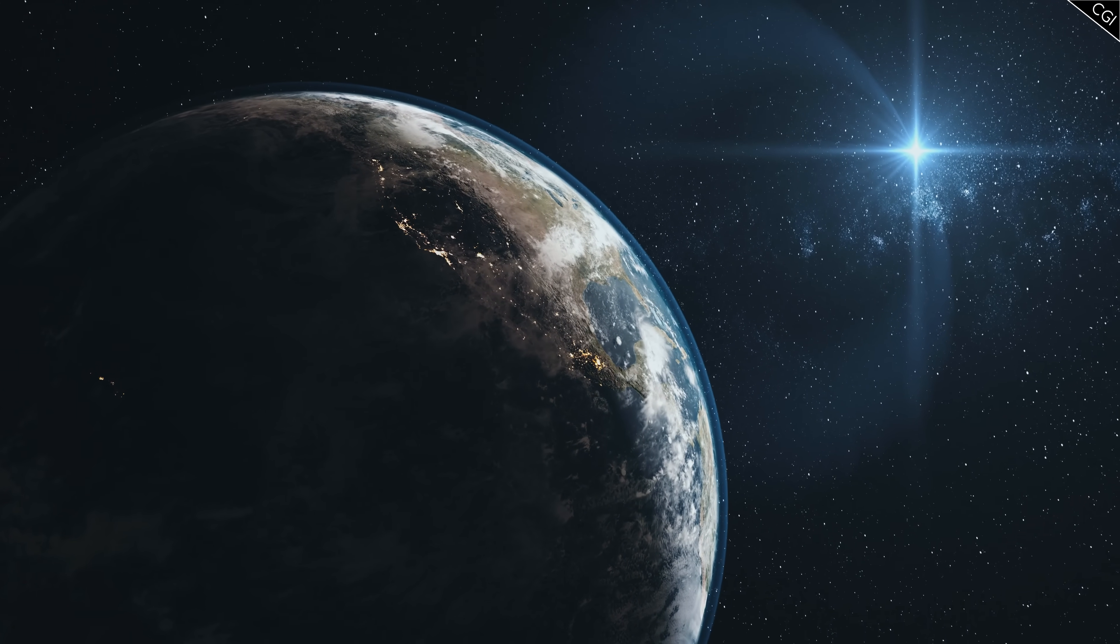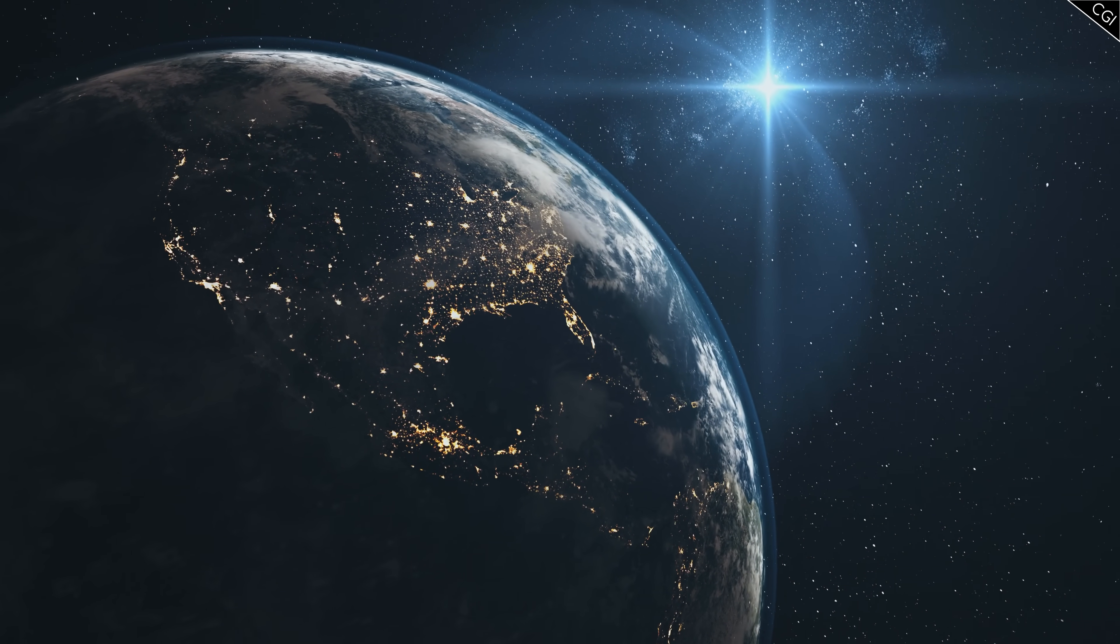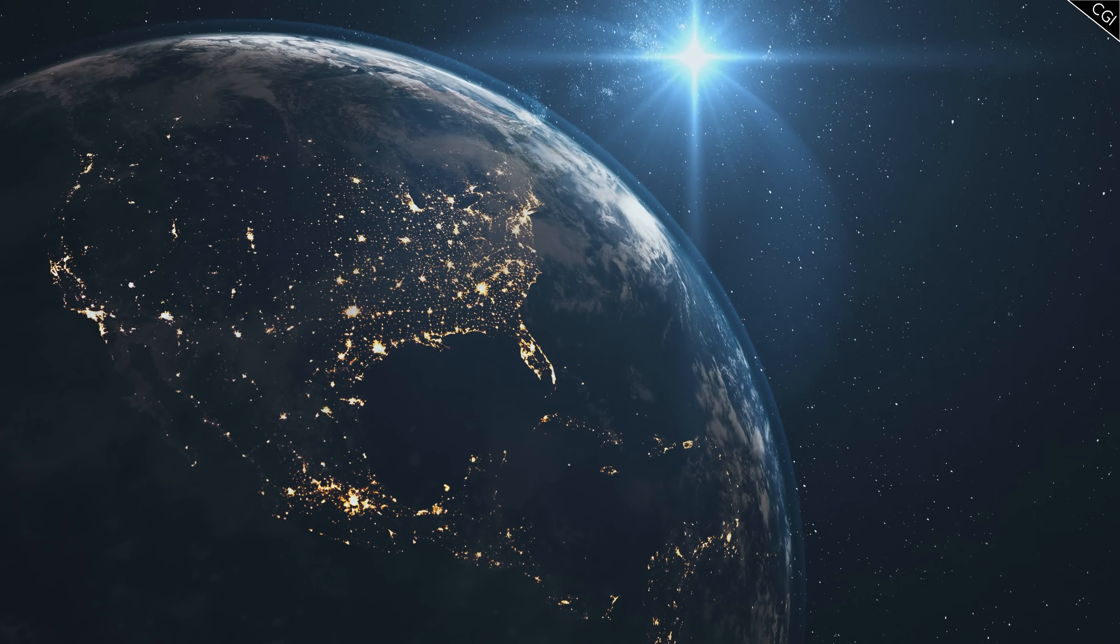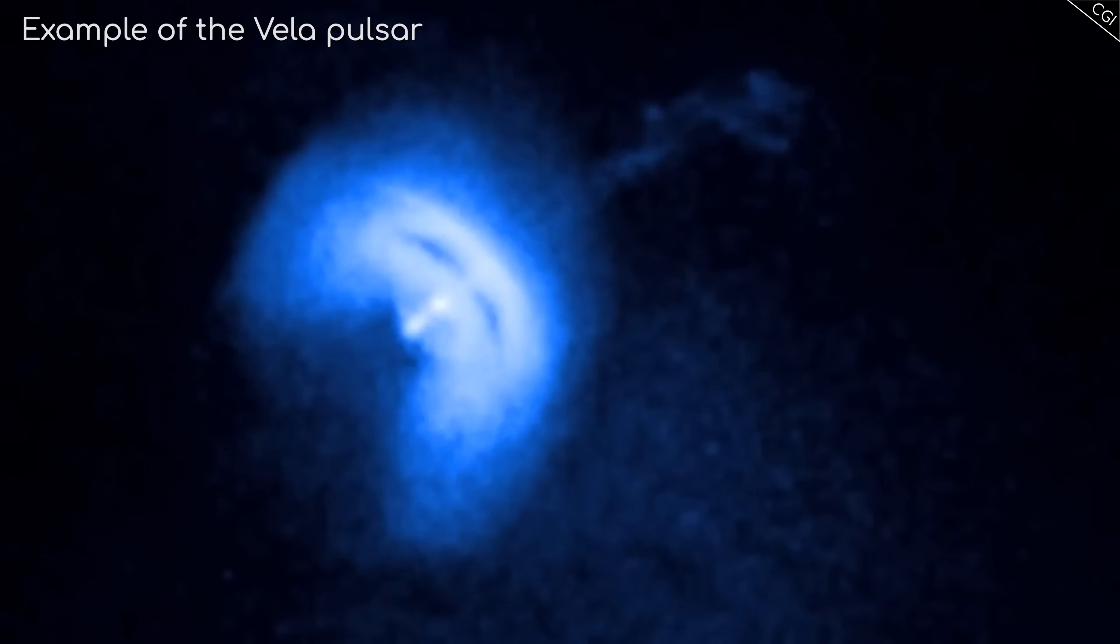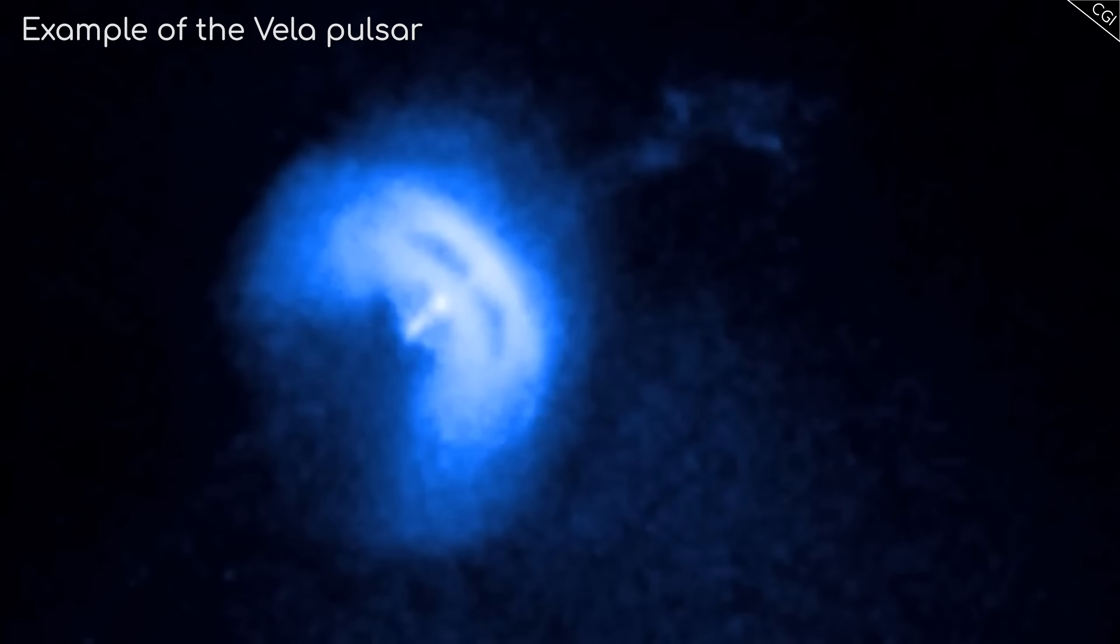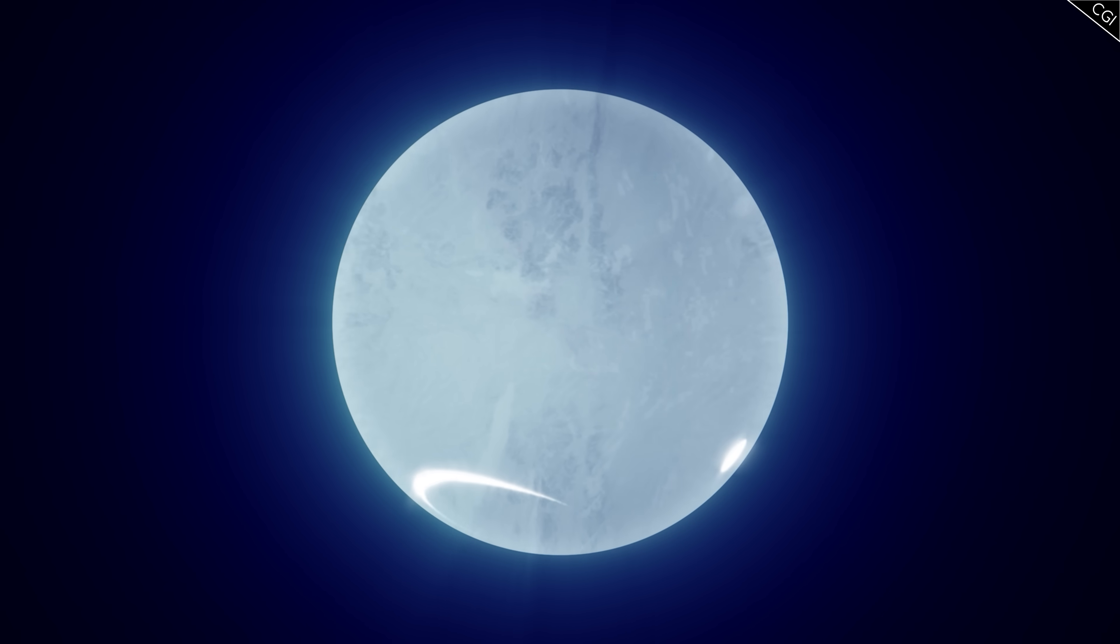But as they began to look deeper into records of past observations, they realized this signal had been arriving at Earth since at least 1988 with remarkable stability, far more stable than is expected for a pulsar rotating every 22 minutes. If it was a neutron star, it was unlike any they had seen before.